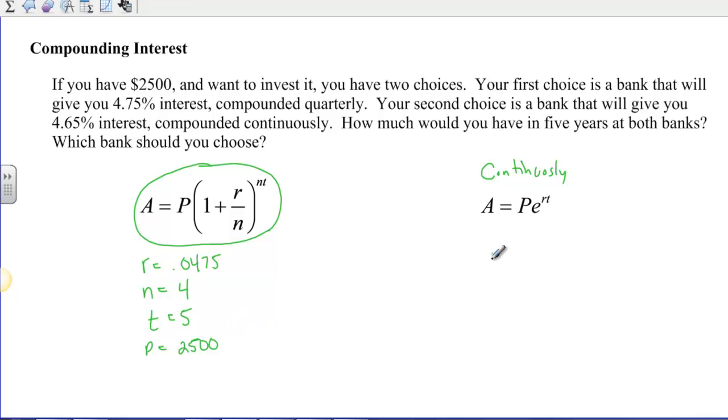Over here, when we compound continuously, our rate is now 4.65. So that's .0465. There is no N. The T is still 5. And the P is still 2,500. So all we're going to do is we're going to plug these two things into our equations and see what it comes up with. So here we got A equals 2,500 times 1 plus .0475 divided by 4 raised to the 4 times 5.